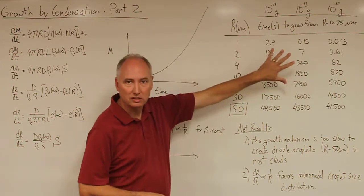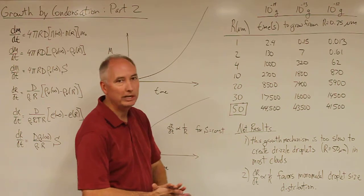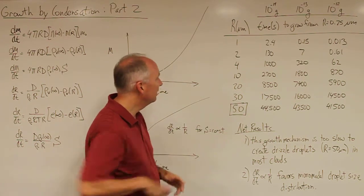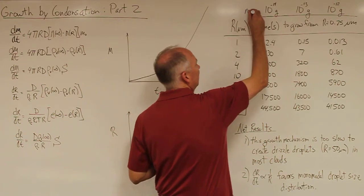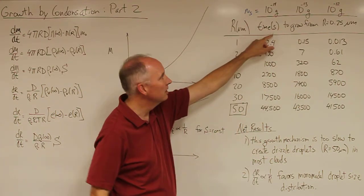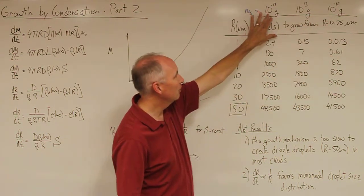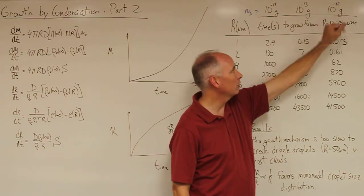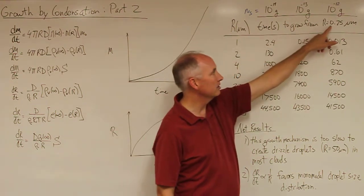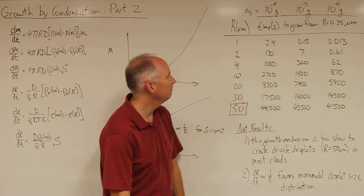But here are the results for a numerical simulation of three different solute initial particle sizes, where you have the mass of the solute Ms equals 10 to the minus 14th grams, 10 to the minus 13th grams, and 10 to the minus 12th grams. So you have a small particle, a medium particle, and a large particle, and all of those particles are starting out with an initial radius of 0.75 micrometers, so they're all starting off at submicron.